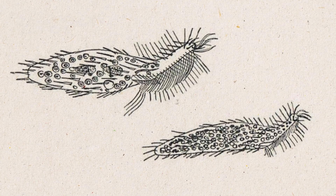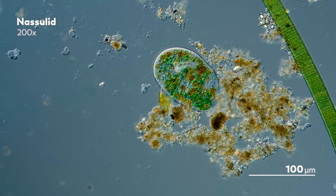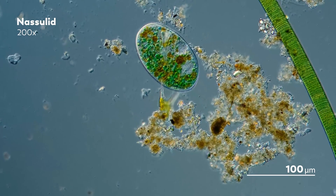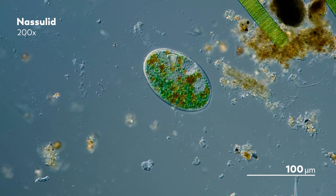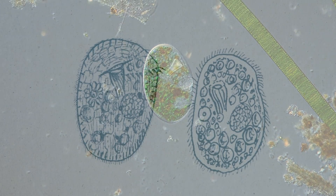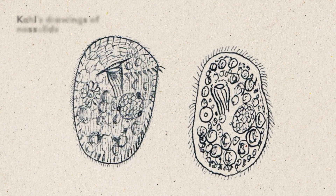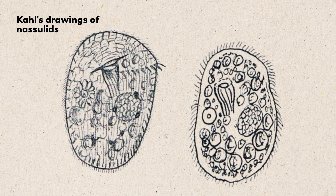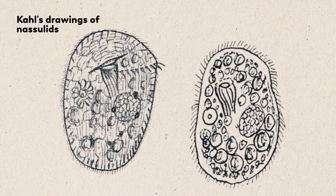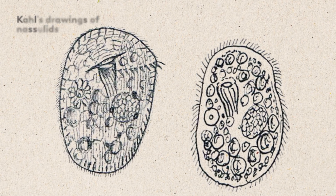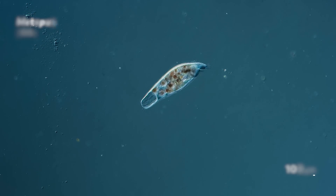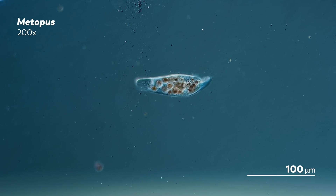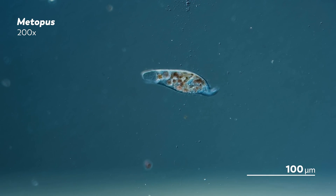During his lifetime, his work invited its share of criticism. Some took issue with his methods, while others disagreed with the definitions he used to distinguish species. But while Kahl acknowledged the feedback, his careful and thorough work would produce descriptions that still endure and inform our understanding of ciliates.